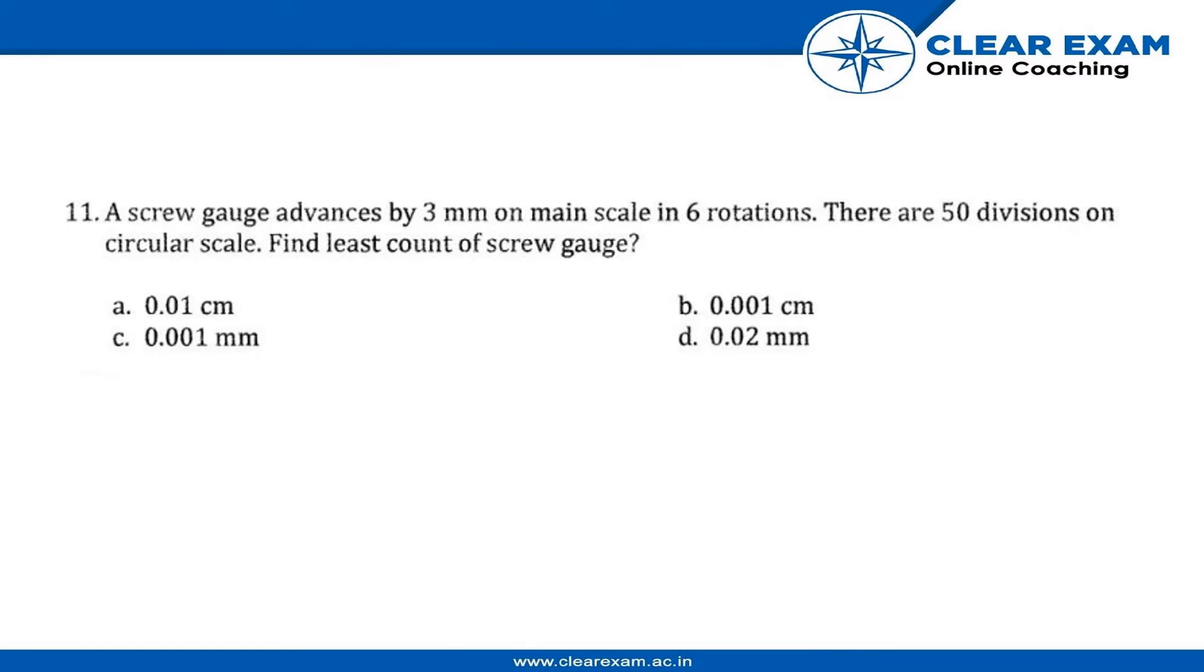So in this question a screw gauge advances by 3 mm on main scale in six rotations. There are 50 divisions on circular scale. Find the least count of the screw gauge.